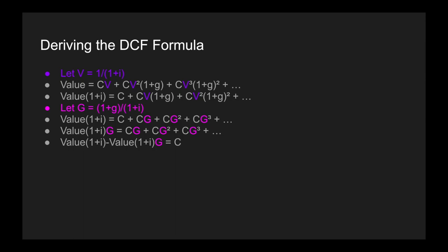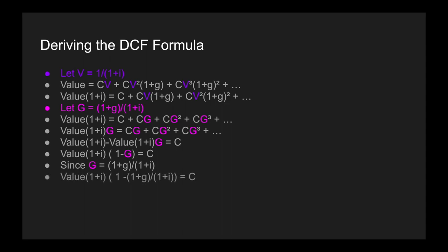Once we have it in that form, we can multiply G on both sides of the equation, then subtract these two equations from each other. By doing that, the right-hand side reduces to just C. On the left-hand side we have value(1+I) minus value(1+I)(G). We clean up the left-hand side to get value(1+I)(1−G) = C. Substituting G back in, after algebraic simplification the terms cancel each other out, and we simply have value(I−G) = C, which means value = C divided by (I−G).